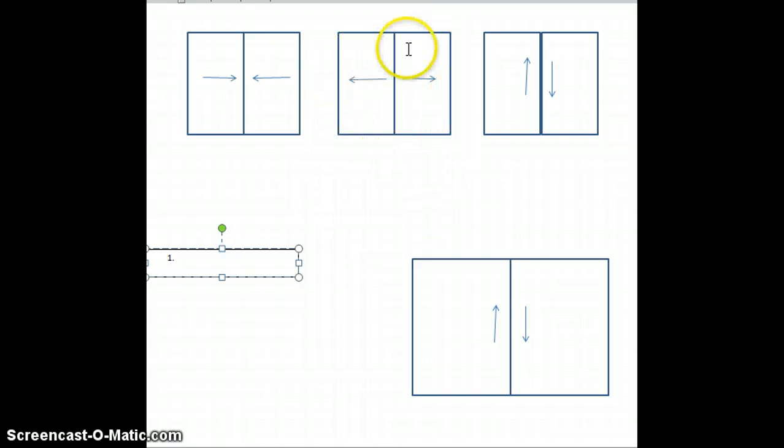This middle one here is showing you a divergent plate boundary in which this plate on the left is going to the left, this plate on the right is going to the right, so they're moving apart from one another.